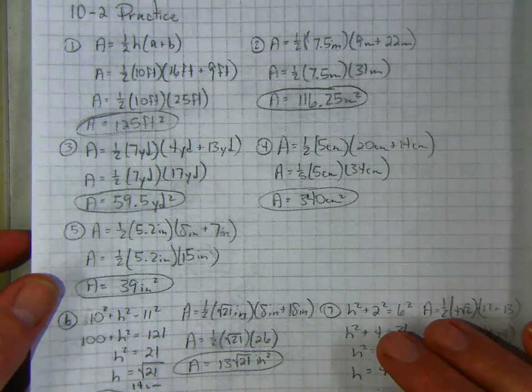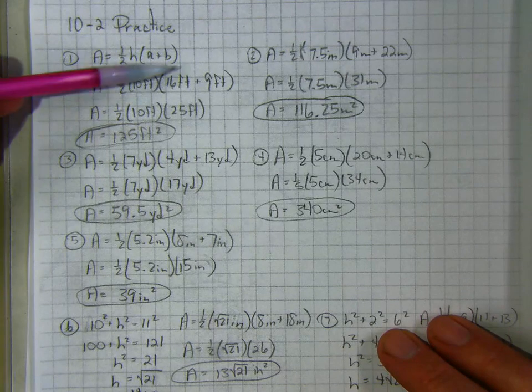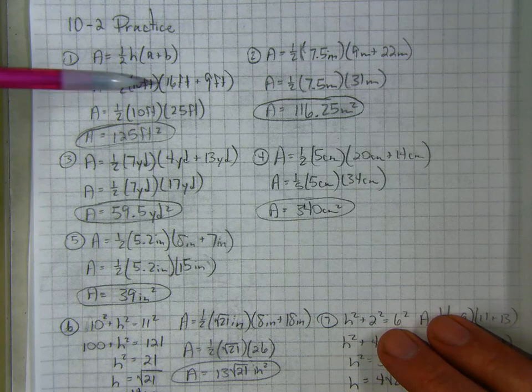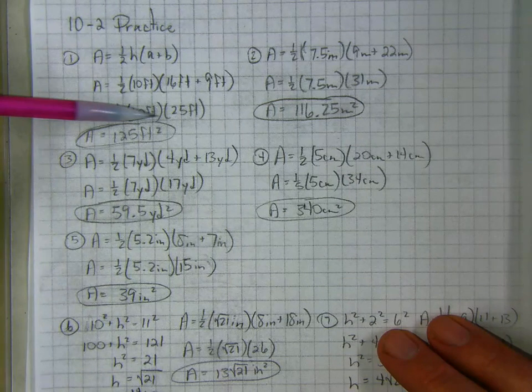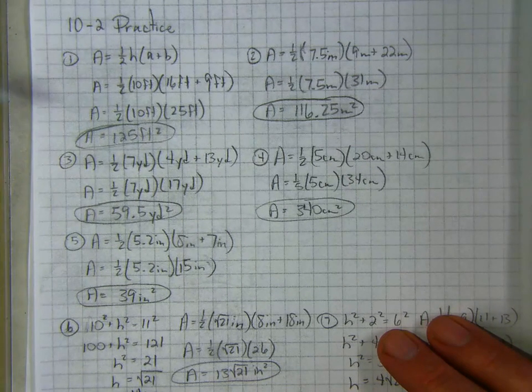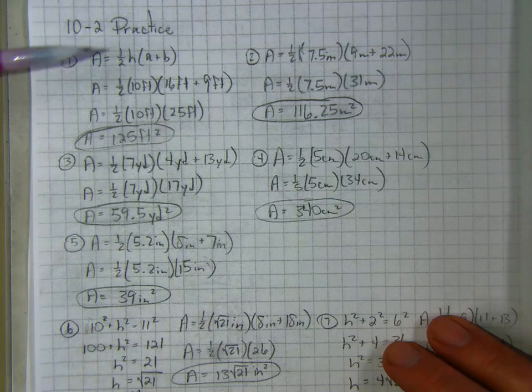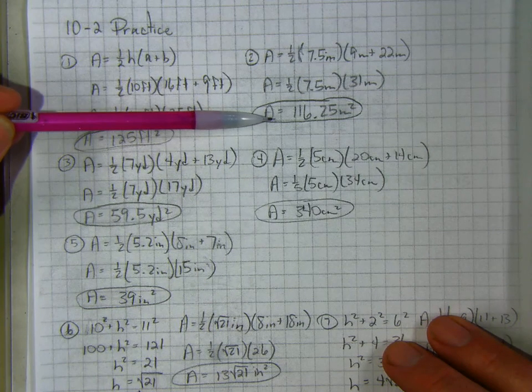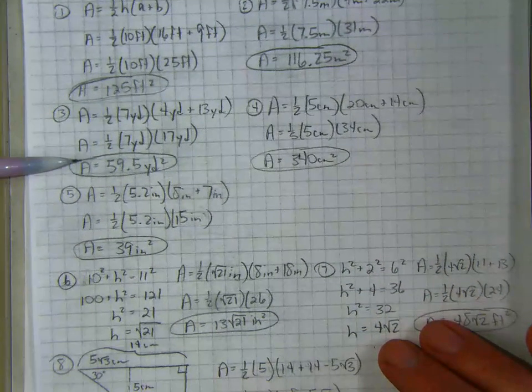And then going on through number 5, we're doing the same thing. So number 1, the area equals one-half of 10 feet, 16 feet plus 9 feet. I added these two together. It does not matter how you multiply them together, but you add these first, and it was 125 feet squared. Number 2 was 116.25 meters squared.